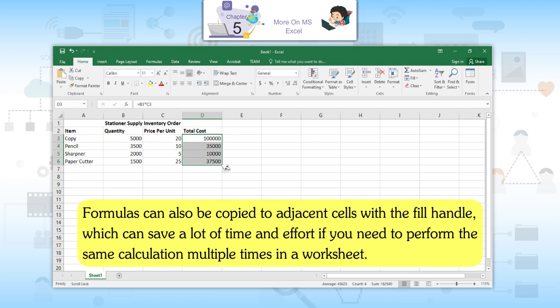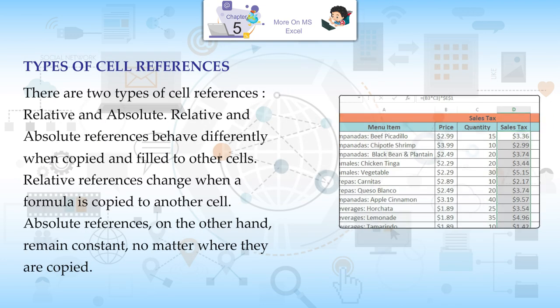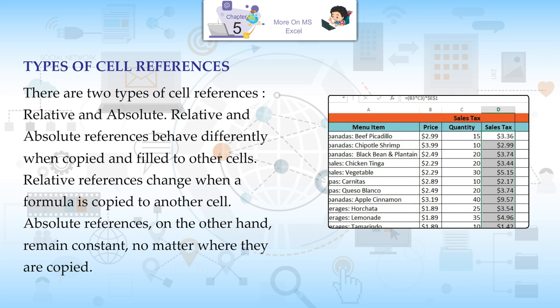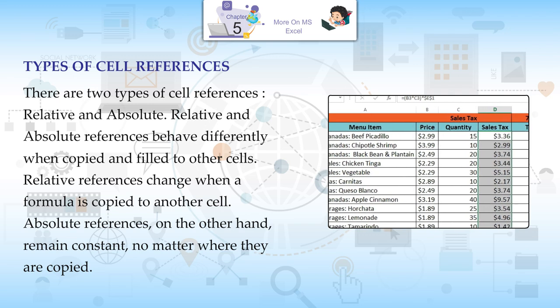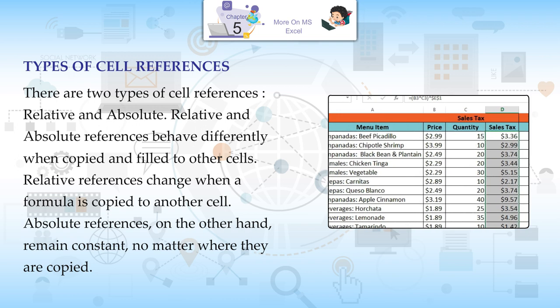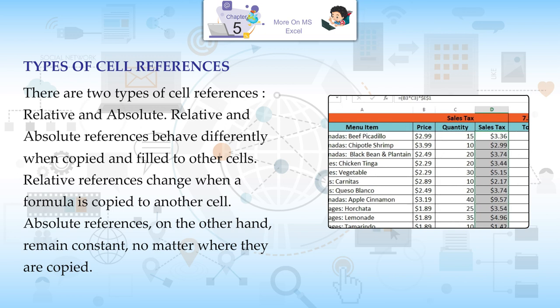Formulas can also be copied to adjacent cells with the fill handle, which can save a lot of time and effort if you need to perform the same calculation multiple times in a worksheet. Types of cell references: There are two types of cell references — relative and absolute. Relative and absolute references behave differently when copied and filled to other cells.